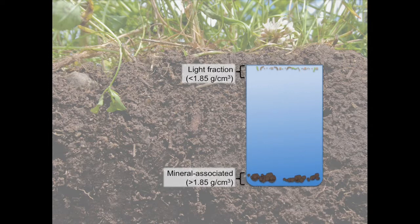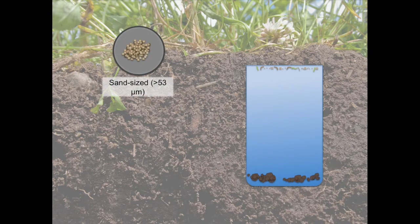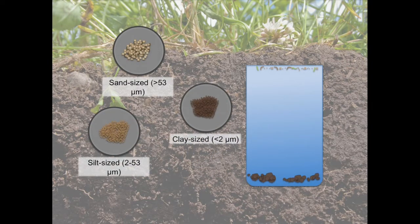Heavier fractions can be further separated by size. Fractions that are larger, greater than 53 micrometers, are characteristic of organic matter that is associated with sand-sized particles, whereas smaller fractions are associated with silt and clay-sized particles.